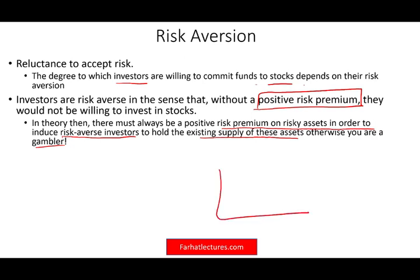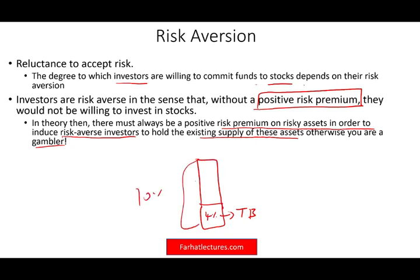You would always want to have that extra risk premium. So if the treasury bill is paying 4%, for you to own stocks you should expect a return of 10% — which is an extra 6%. You would only take the extra risk if the expected return is higher. Otherwise, we will not take that risk.